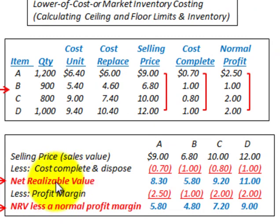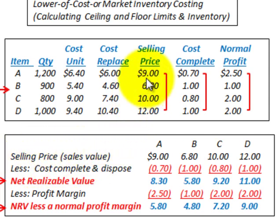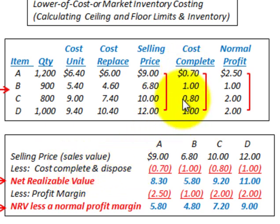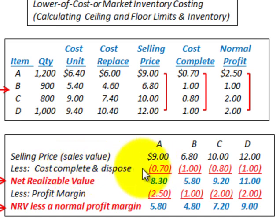Let's look at the net realizable value in terms of our problem. This is calculated by taking the selling price — the sales value on a per unit basis — and subtracting the cost to complete or dispose of these items, also shown on a per unit basis. Taking our selling price and subtracting the cost to complete and dispose gives us the net realizable value for each item A, B, C, and D.